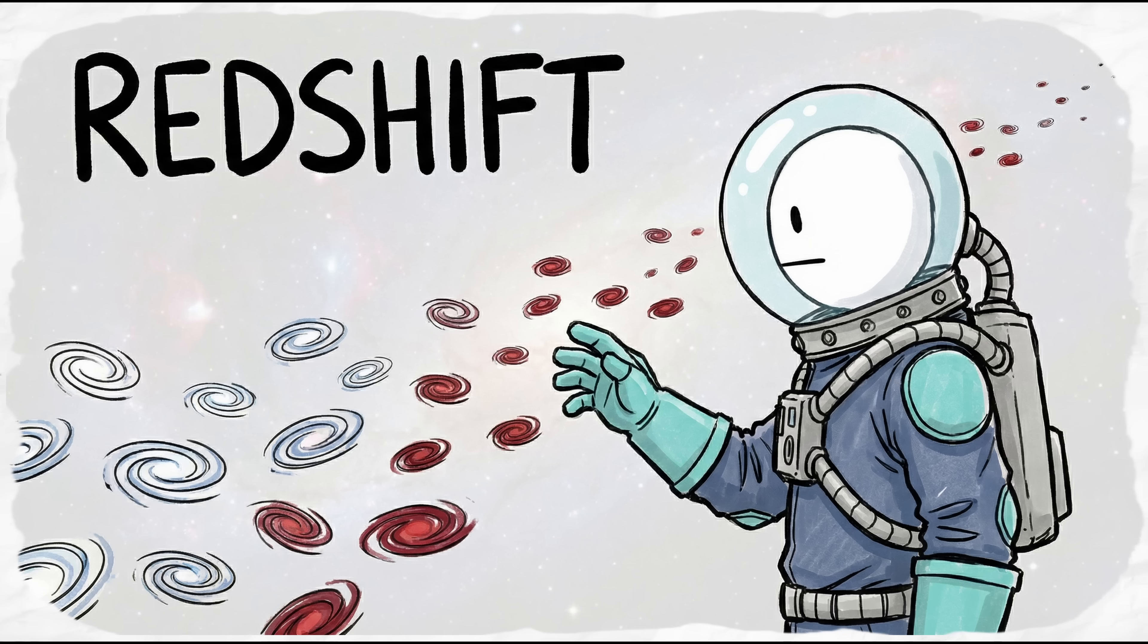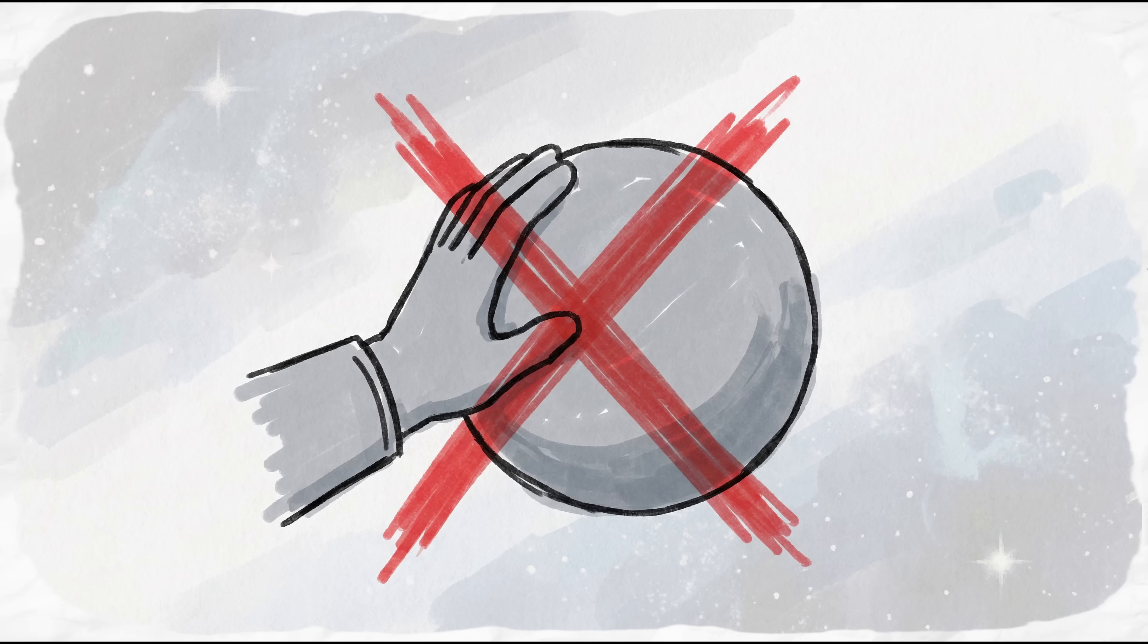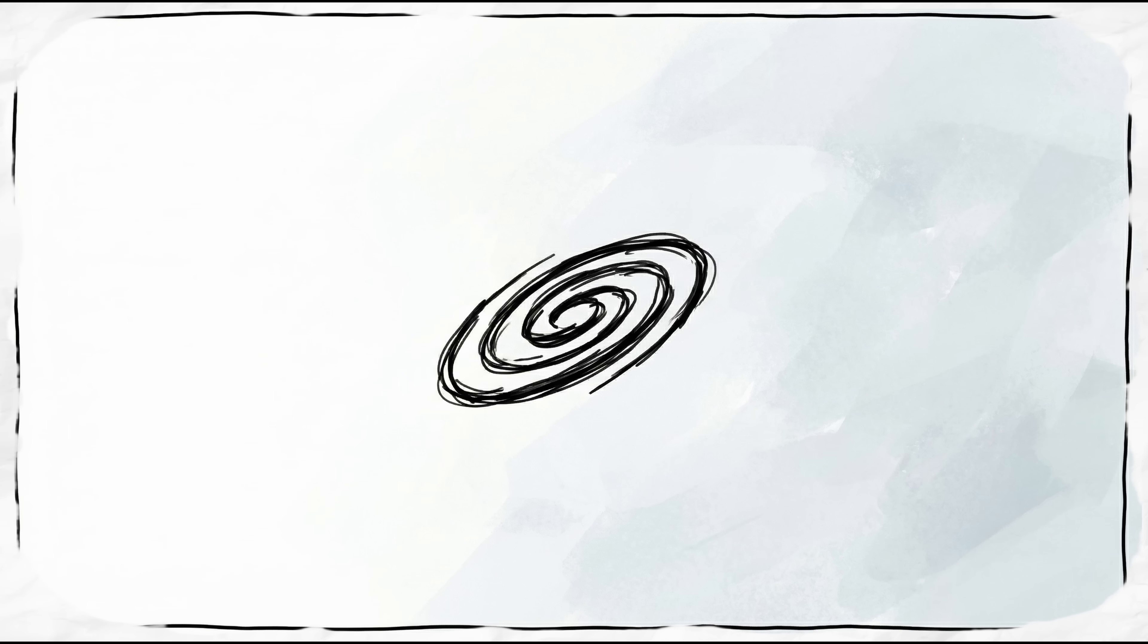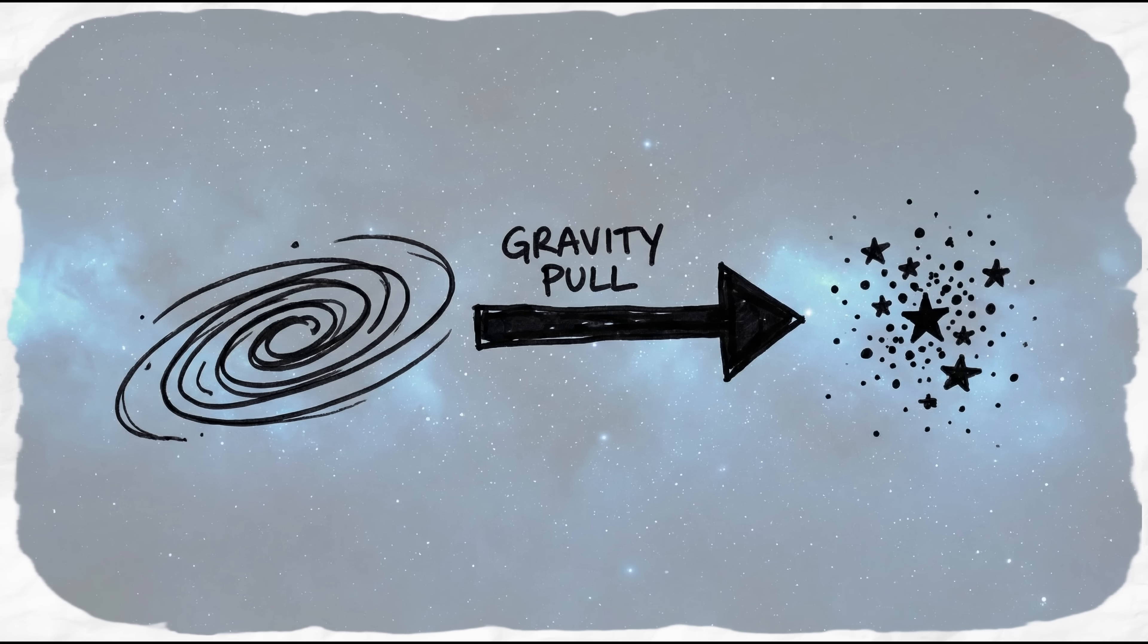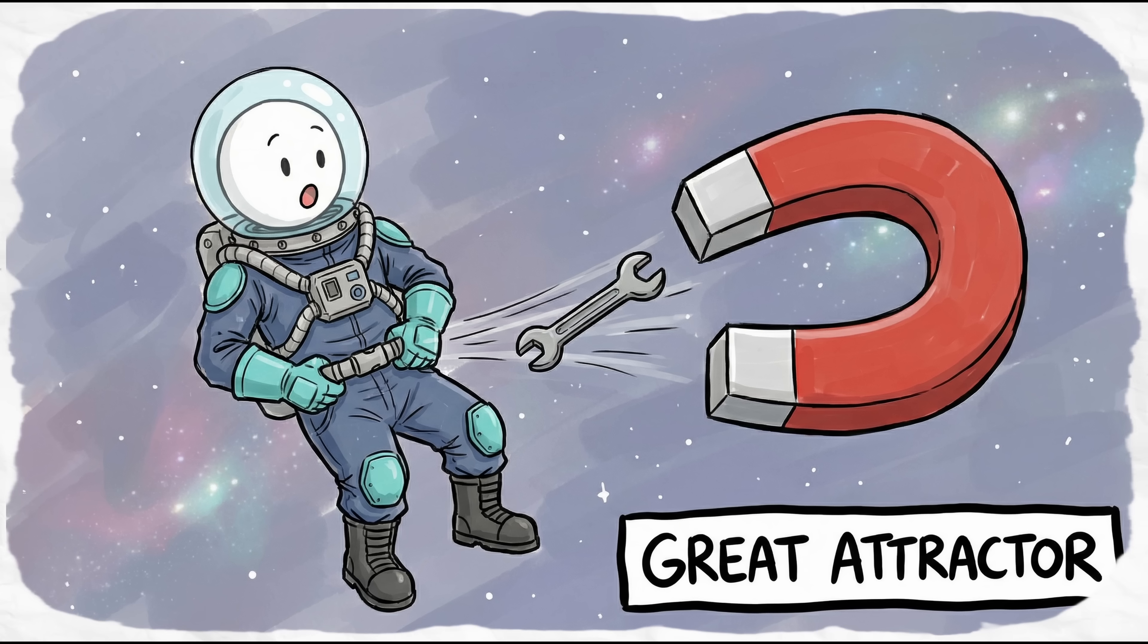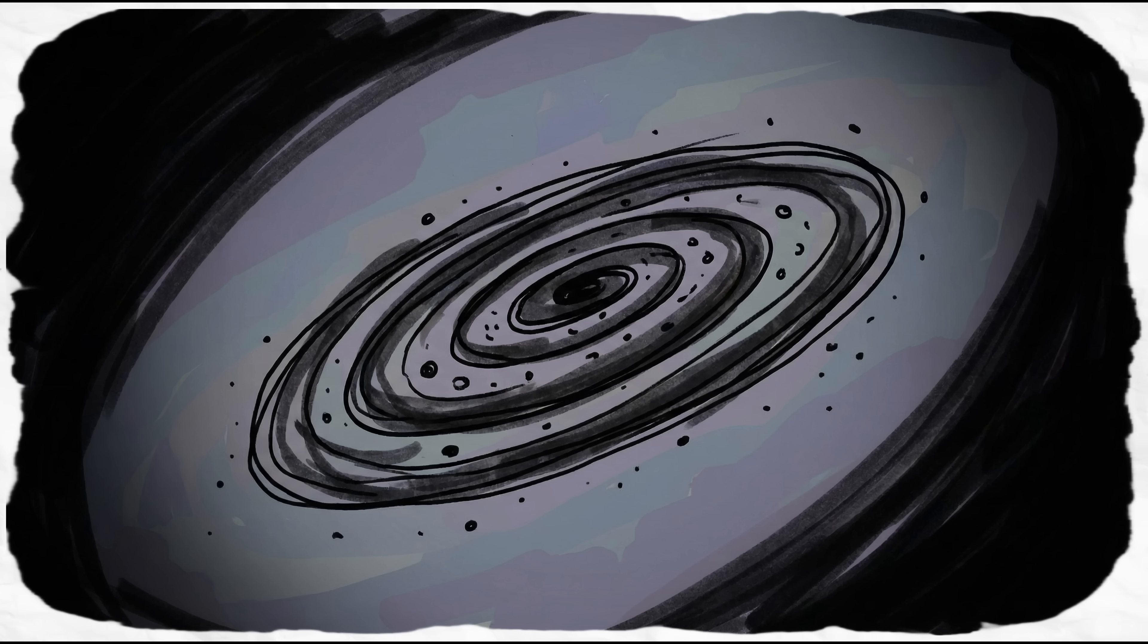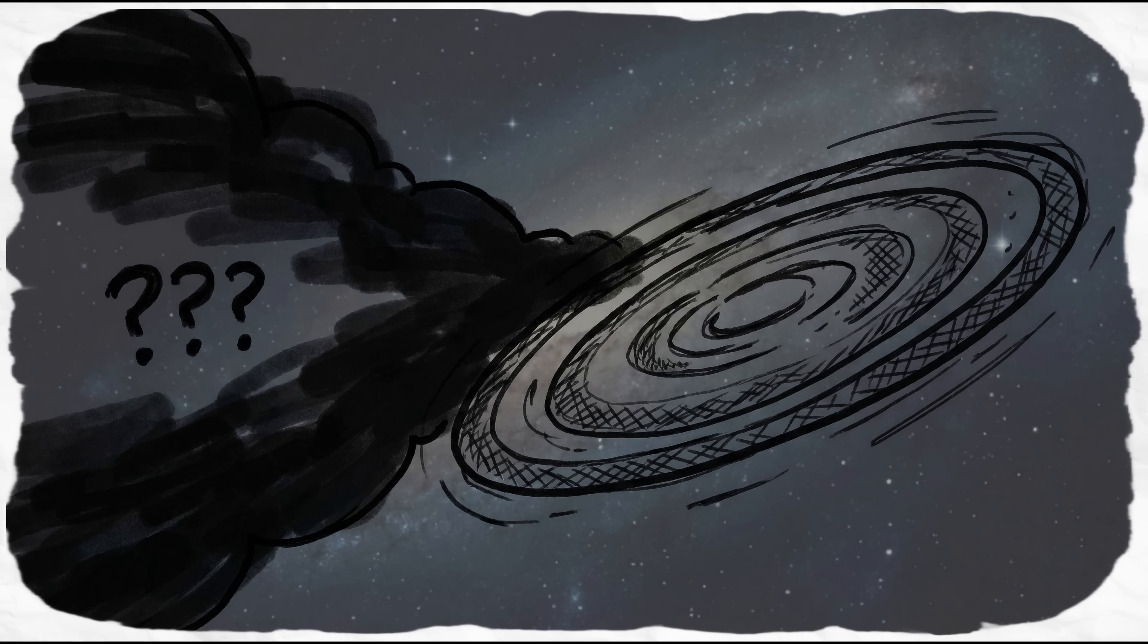And if being alone wasn't enough, we're being abandoned. The Dipole Repeller acts like a gravitational vacuum. We aren't being pushed, we are being left behind. Because the space behind us is empty, the gravity of the rest of the universe is pulling us away, and there's nothing on the other side to pull us back. Combined with the pull of the Great Attractor, our entire galaxy is drifting through the dark at 630 kilometers per second toward a destination we can't see.